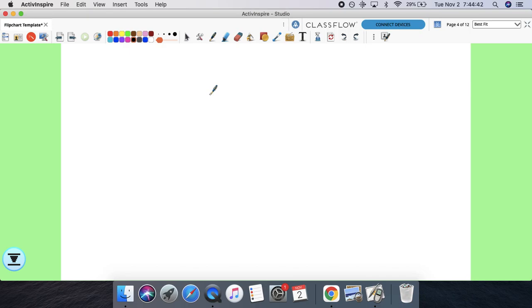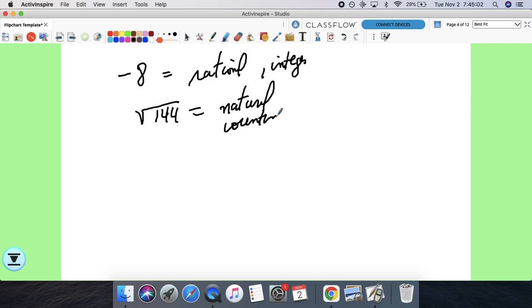I didn't miss that many. So 12, negative 8, is obviously a rational number and an integer.